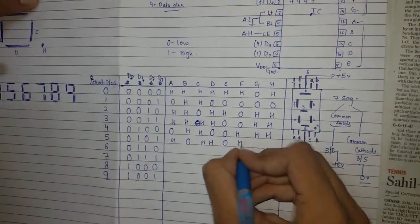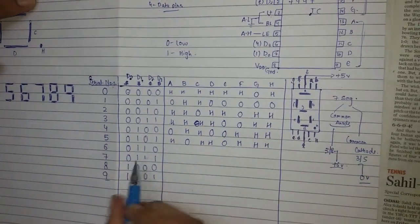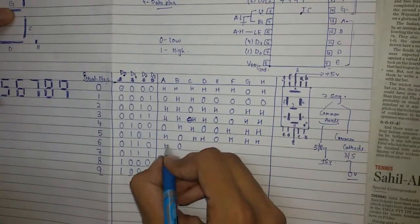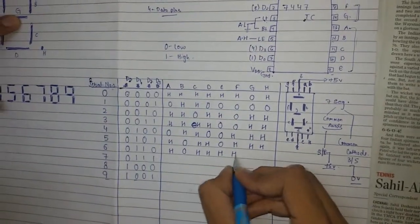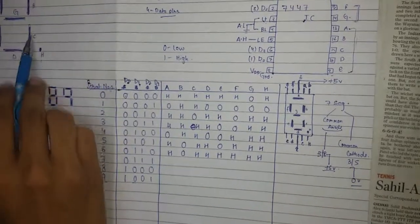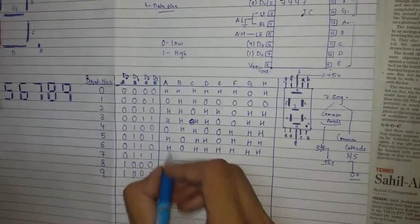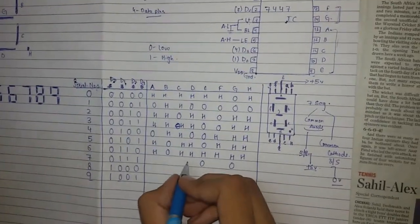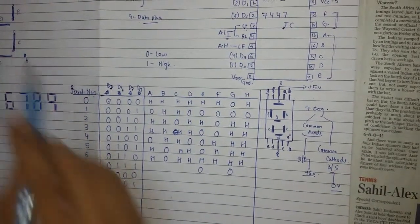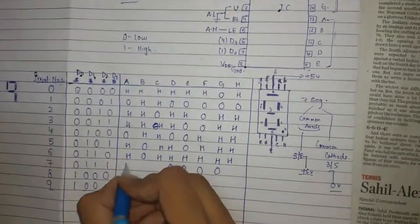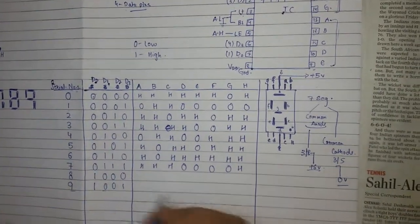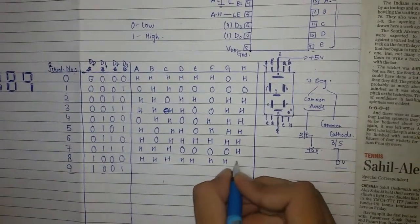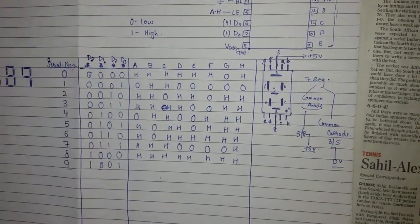High means one, you have to give five volts. For digit six, only B is zero and others are high. For seven, E, G, and D are zero and others are high. For eight, all segments are high. For nine, E and D will be zero.